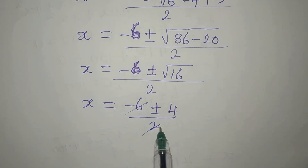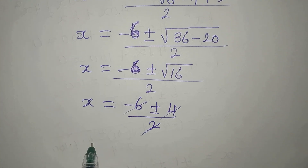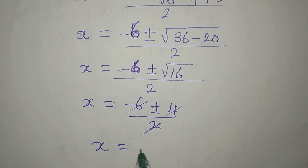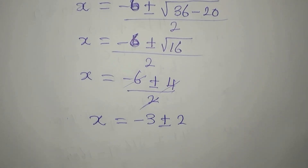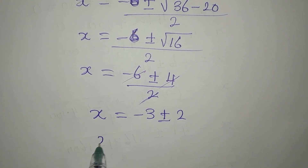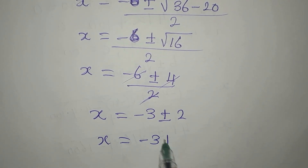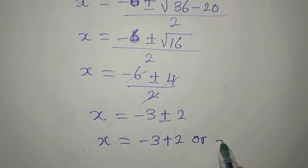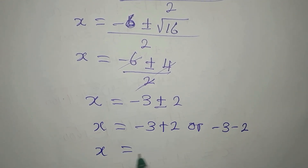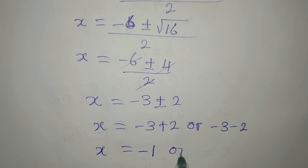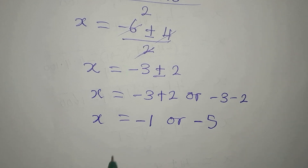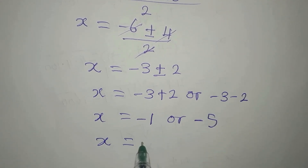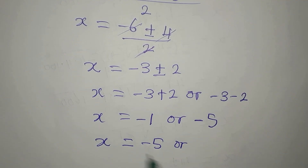Continuing, x equals negative 6 plus or minus the square root of 16, which is 4, divided by 2. Two goes into both terms, so x equals minus 3 plus or minus 2. This means x equals minus 3 plus 2, which is minus 1, or minus 3 minus 2, which is minus 5.